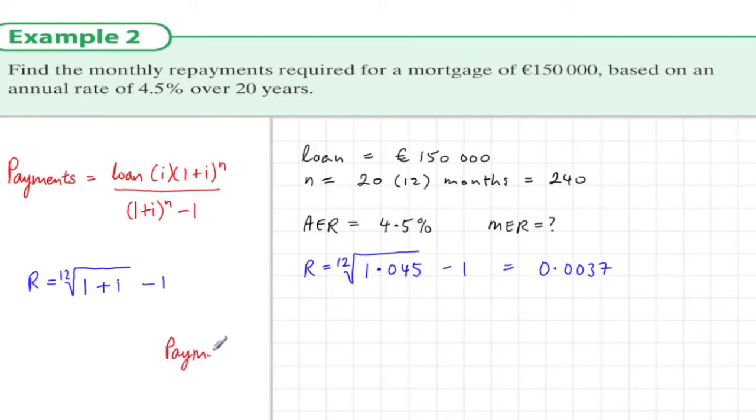So using the payments part, then we just sub in the numbers we have: we have the loan and i and n.